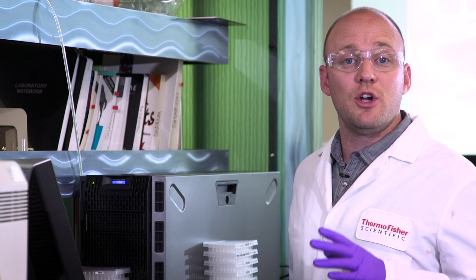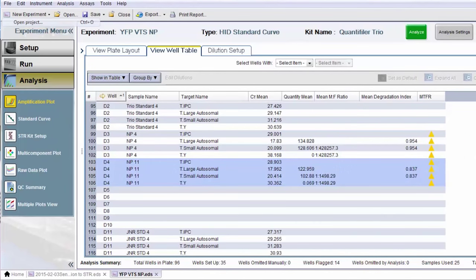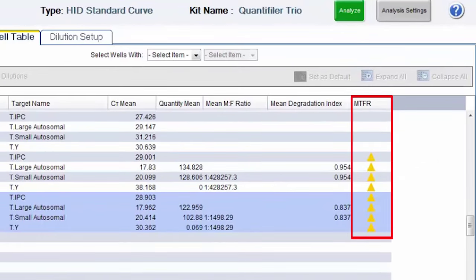So let's go back to the Trio quantification result to see what it tells us. Here it's flagging the male-to-female ratio. This alerts the user that the sample in question has a low male-to-high female ratio and a YSTR kit would be more appropriate.